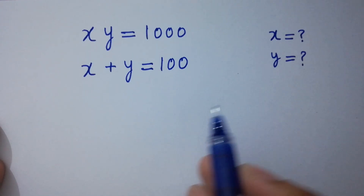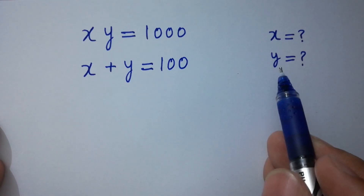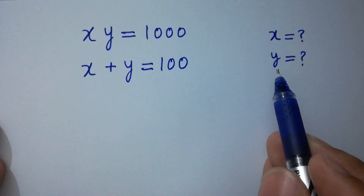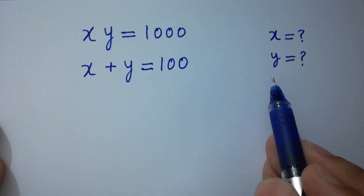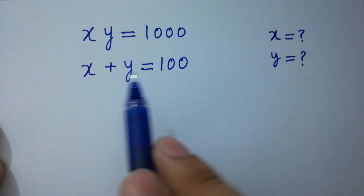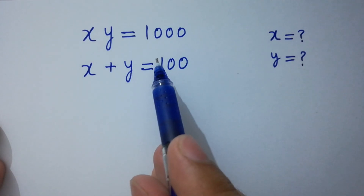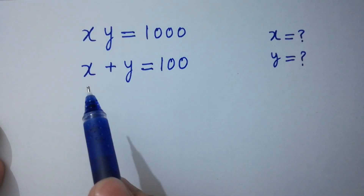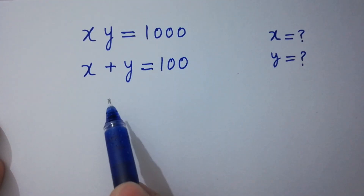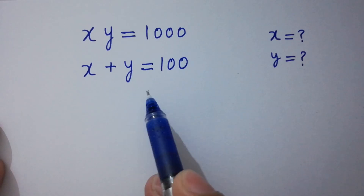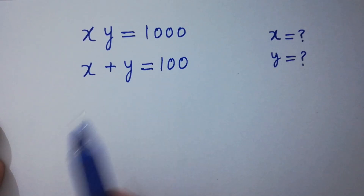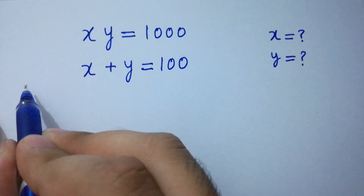Hello friends. Find the value of x and y if xy equals 1000 and x plus y equals 100. Let's have a solution.